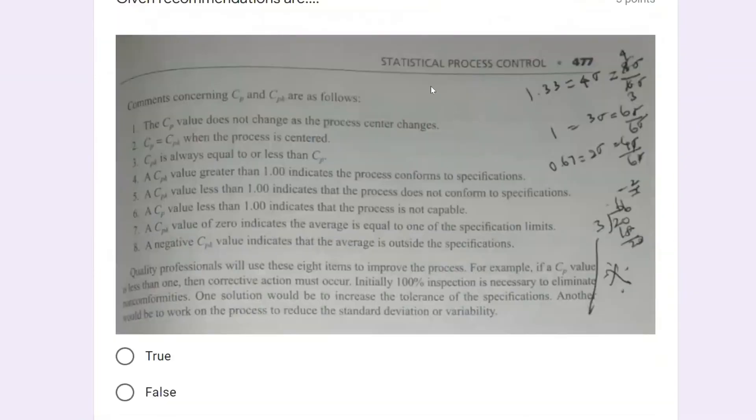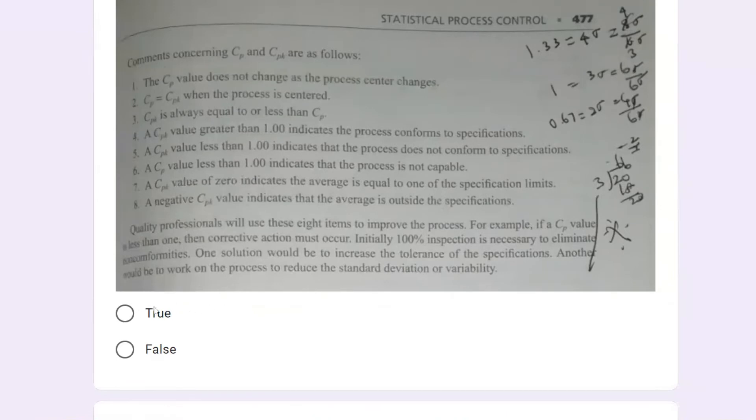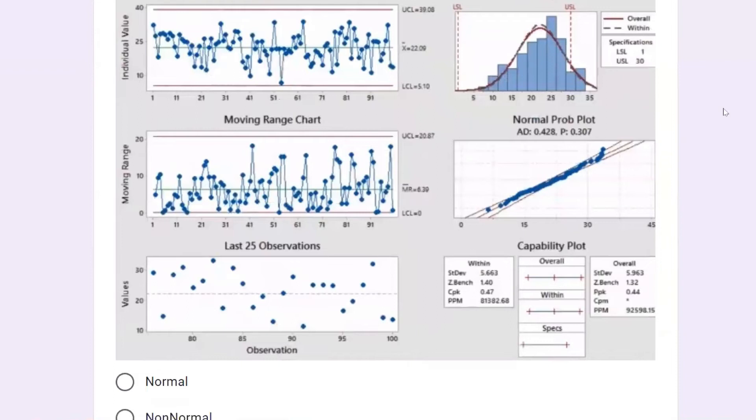A very beautiful recommendation is given in the Statistical Process Control book, Total Quality Management Fifth Edition. It says that quality professionals will use these eight items to improve the process. Cp does not change, Cp equals Cpk if the process is centered. If Cp is greater than 1, the process conforms to the requirement. Less than 1 means it does not conform. Equal to 1 means it just conforms to the requirement, which is three sigma. If a Cp value is less than 1, corrective action must occur. Initially, 100% inspection is necessary to eliminate non-conformities. One solution would be to increase the tolerance of the spec. Another solution would be to reduce the standard deviation.